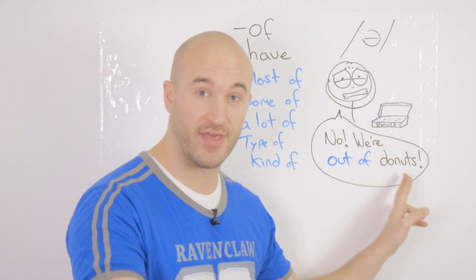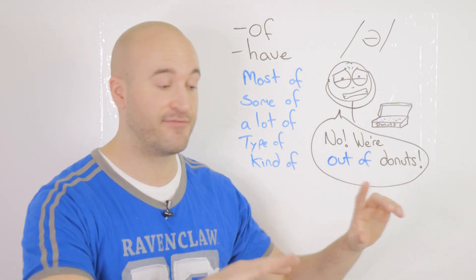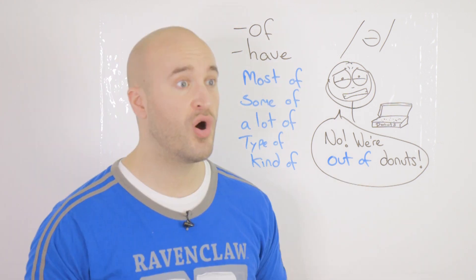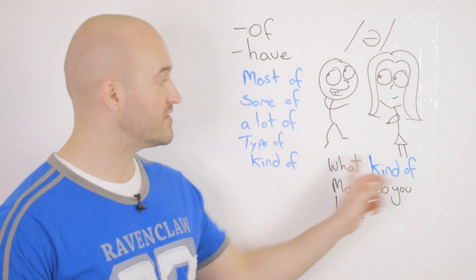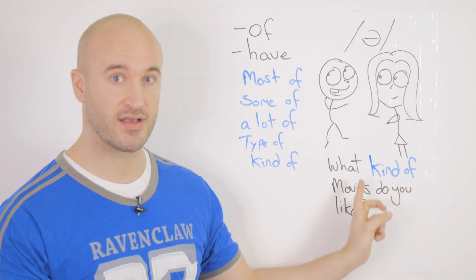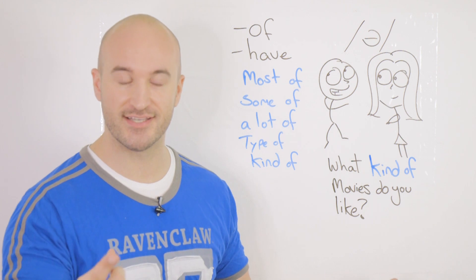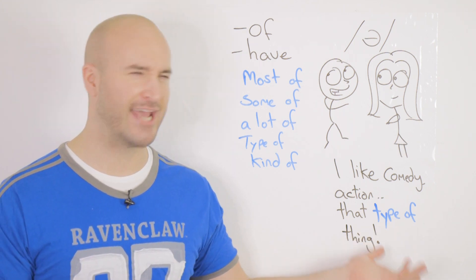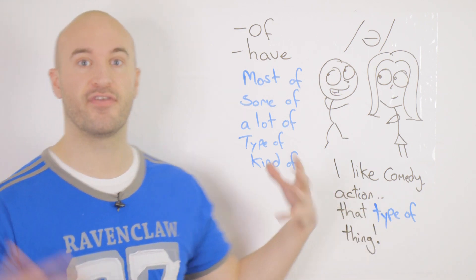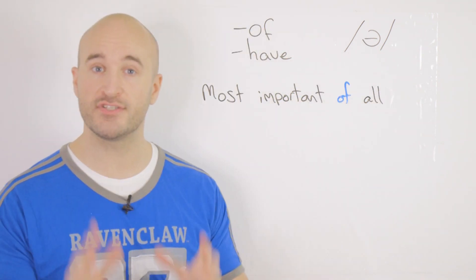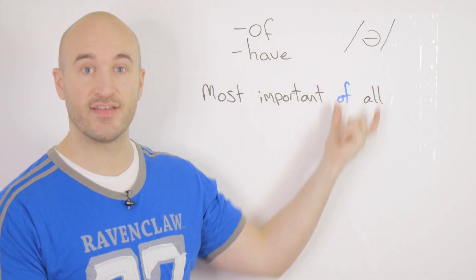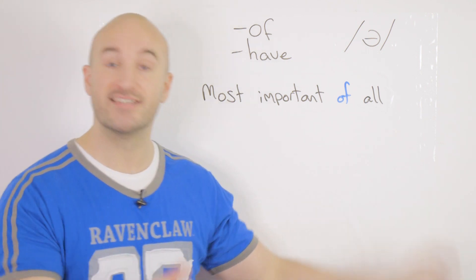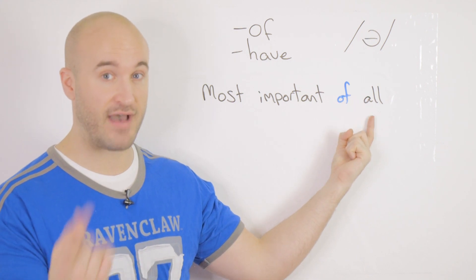If you didn't know, 'to be out of something' means you have no more of that thing — it's finished, done, bye-bye. But how do you pronounce it? What kind of movies do you like? Kinda — 'type of' and 'kind of' mean the same thing. However, we don't reduce to just a schwa when there's a vowel sound after. For example, 'most important of all' sounds good, but 'most important of all' with the schwa sounds ridiculous. Don't reduce when there's a vowel sound after.